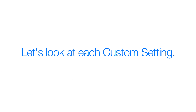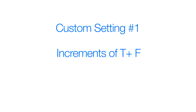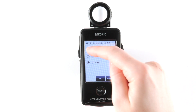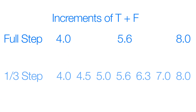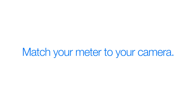Let's look at each custom setting starting with the increments of T plus F. Custom setting 1: increments of T plus F. This setting allows you to select full, third, or half step increments of F stop and shutter speeds. Select a setting that matches how your camera is set.